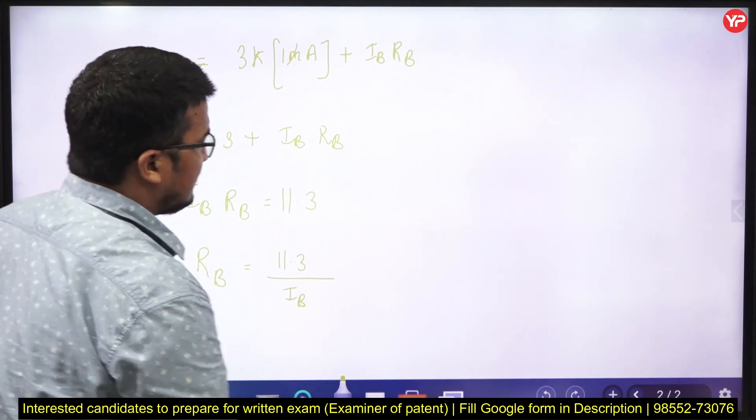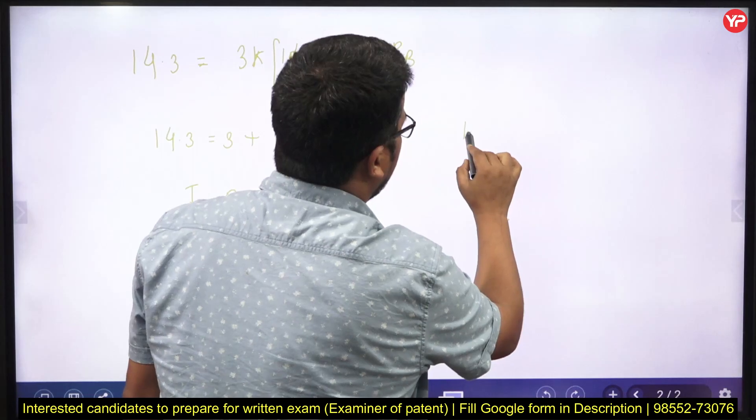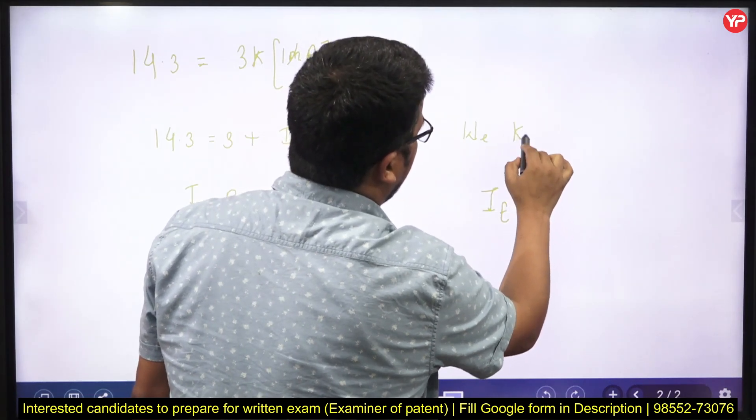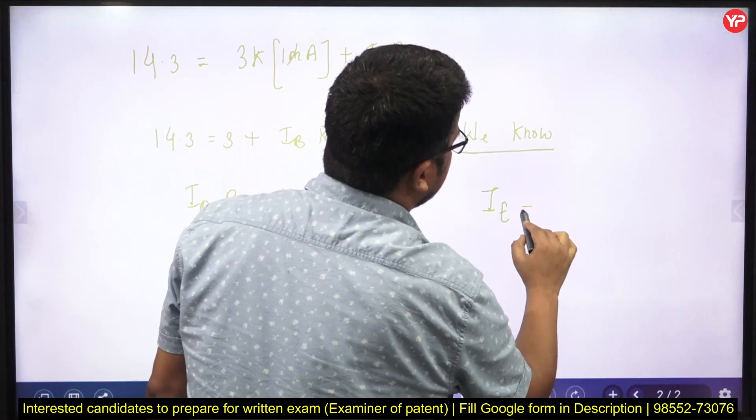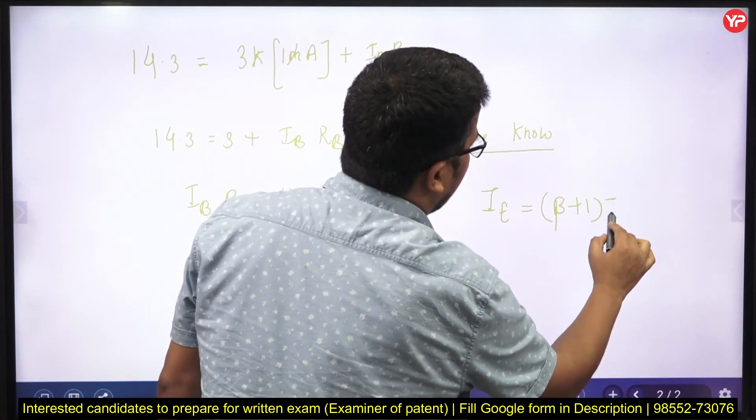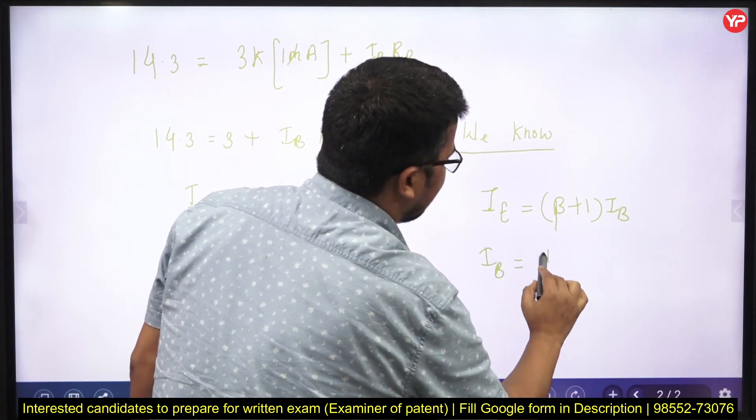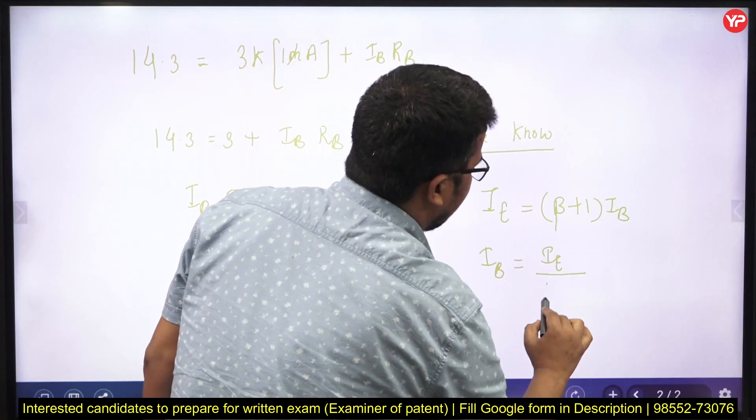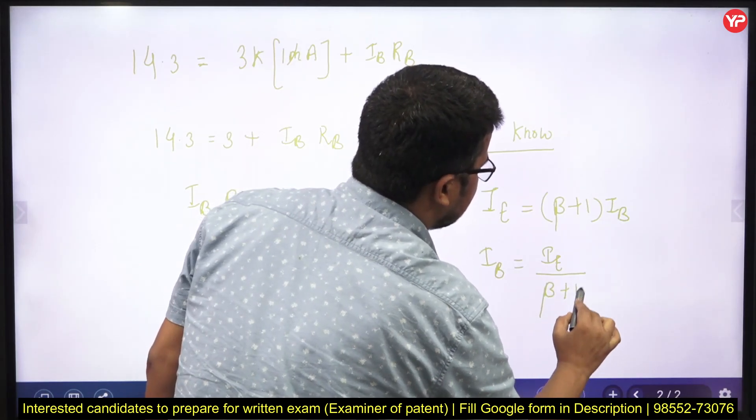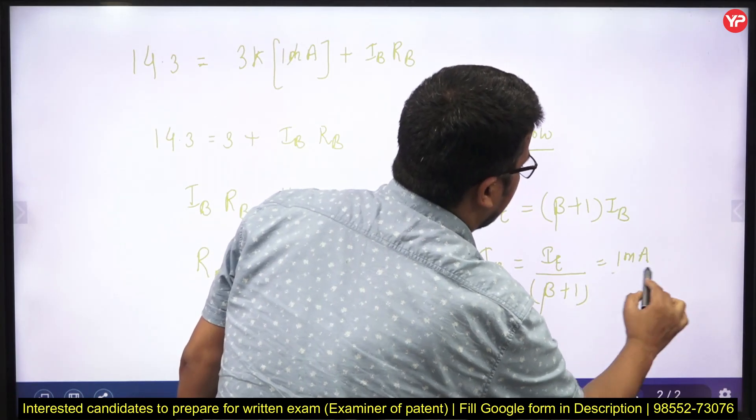Since we are supposed to calculate RB, RB is equal to 11.3 upon IB. And I have told you already IE. Again write the next step. We know, again write the next step, don't avoid the step. We know IE is equal to beta plus 1 multiplied by IB. We can write from here IB is equal to IE upon beta plus 1. It means I can write this equal to 1 milliampere upon 100.